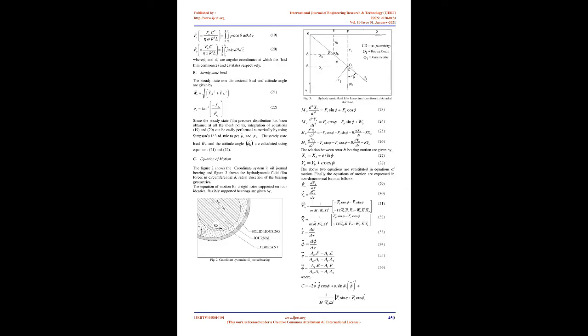Basic Theory: The modified average Reynolds equation for fully lubricated surfaces is derived starting from the Navier-Stokes equations and the continuity equation with few assumptions. The schematic diagram of the flexibly supported oil journal bearing is shown in Figure 1. The non-dimensional form of the momentum equations and the continuity equation for a journal bearing are presented, where the variation in density with time is considered to be negligible.